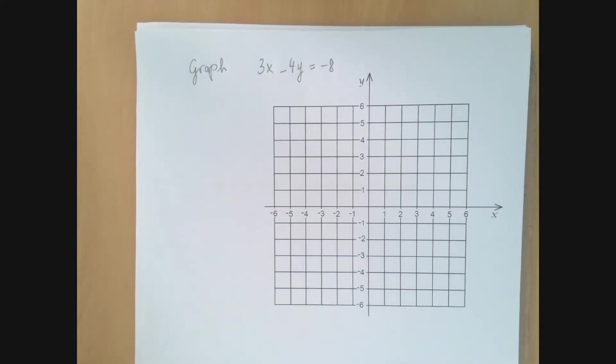Okay, so we need to graph the equation 3x minus 4y equals negative 8.